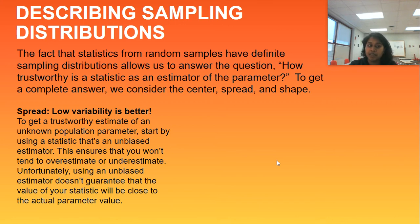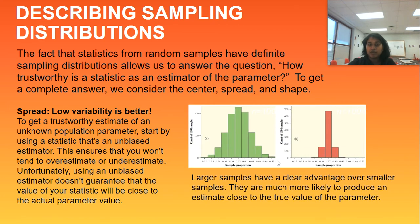Unfortunately, using an unbiased estimator does not guarantee that your statistic will be the actual parameter value. And I want to note this right here. If your larger samples have a clear advantage over small, they are more likely to produce an estimate close to the true value of the parameter. However, taking a large sample does not fix bias. Remember that even large voluntary response samples or convenience samples are worthless because of bias. So small, large, it doesn't matter. Low variability will be better, but it does not mean that your bias has been removed. So please do not forget that. Don't get those two concepts confused.